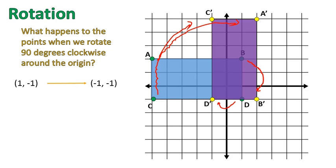The point 1, negative 1, that's the point D, it became negative 1, negative 1. Our point 1, positive 2, that's B, became 2, negative 1. The point negative 5, negative 1, or the point C, became negative 1, positive 5. And the final point, negative 5, positive 2, which was the point A, became A prime, which is 2, positive 5.